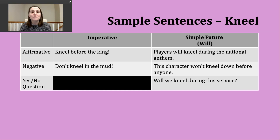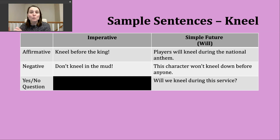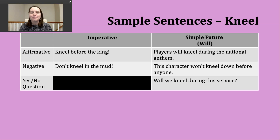Now let's talk about the simple future. Today we're going to practice making sentences with will. This is really common as people make predictions about what they think is going to happen in the future. It's also common when making offers or promises. The nice thing about the simple future with will is that the structure is the same no matter what our subject is: subject, then will, then the base verb. Here's an example: Players will kneel during the national anthem.